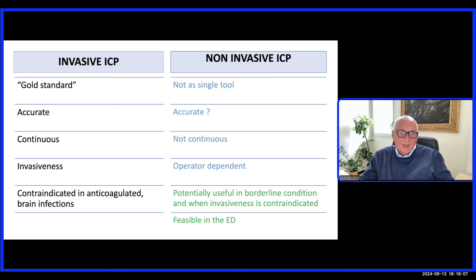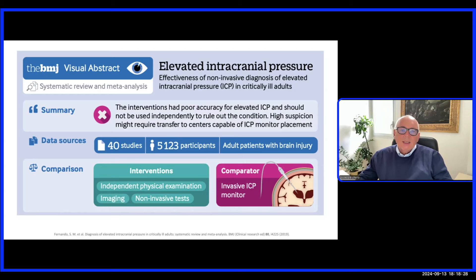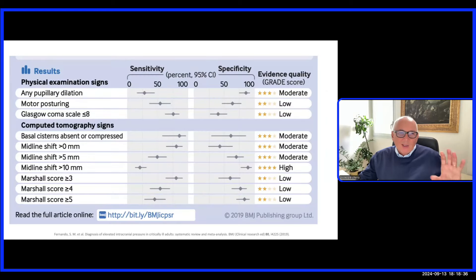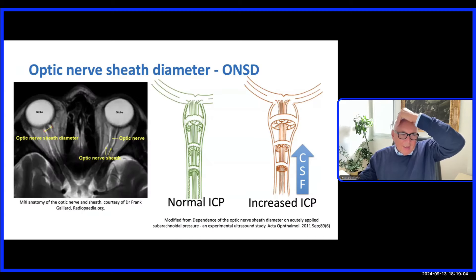Non-invasive tools are not as precise as we would like, they provide only snapshot rather than continuous information, and some are operator-dependent. A recent meta-analysis published in the BMJ examined physical exam, imaging, and non-invasive tests compared against invasive ICP monitoring. Looking at the results, the specificity and sensitivity of CT scan findings such as midline shift and absent or compressed basal cisterns, as well as clinical examination, are only moderate for detecting elevated ICP.